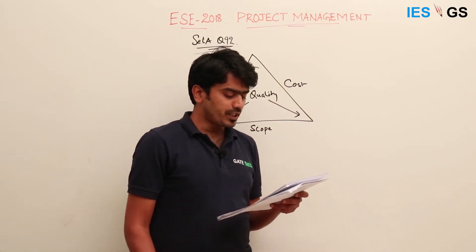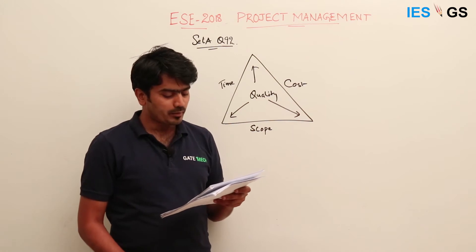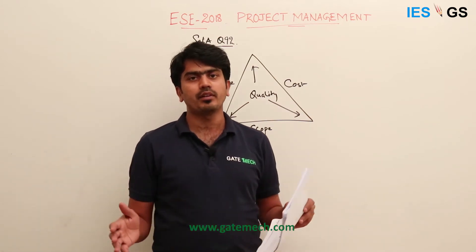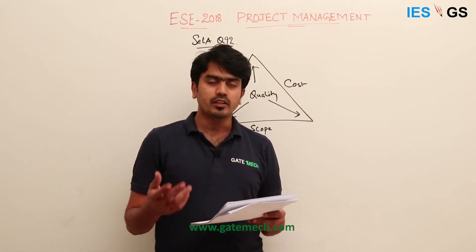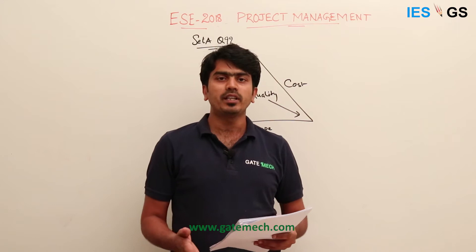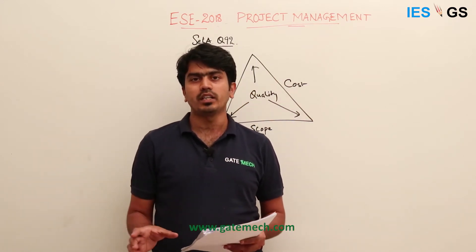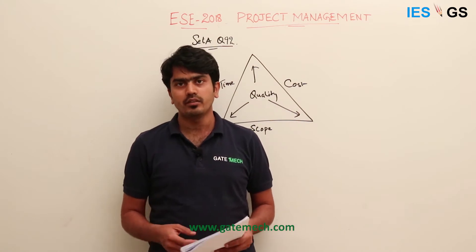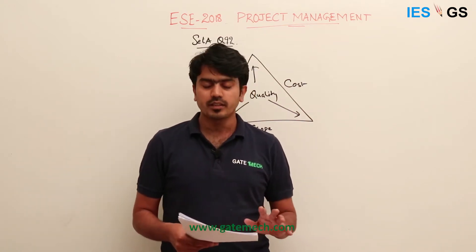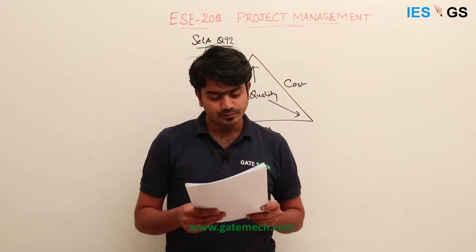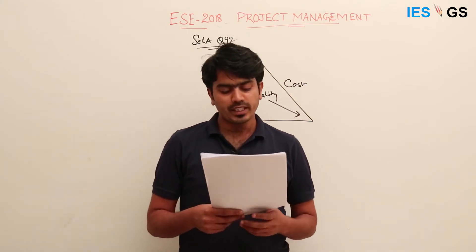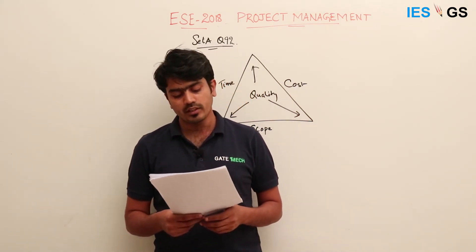Statement one says project management is essentially the process to plan implementation and predetermine resources. Given the choice of total duration and required quality as the two targets, we need to implement the project within the deadline and within that quality level, determining what resources and funds are needed in each phase. That statement is correct. Coming to statement two: of the four dimensions, only any two can be pre-assigned and others must abide by these two.